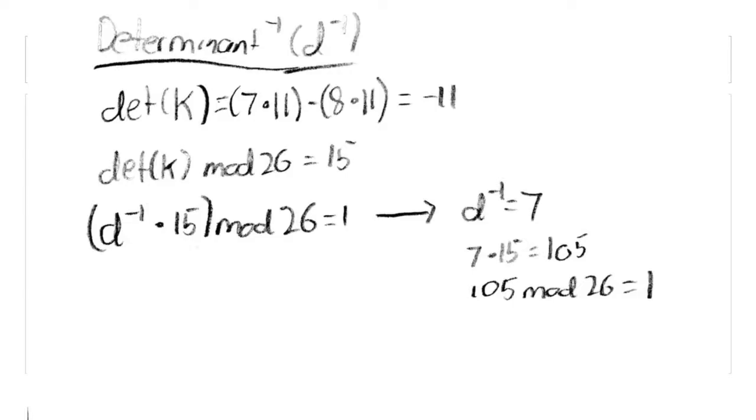Now, to find the inverse of the determinant, we first find the determinant of the original key matrix. In this case, it is negative 11. Then, we modulo by 26, resulting in 15.